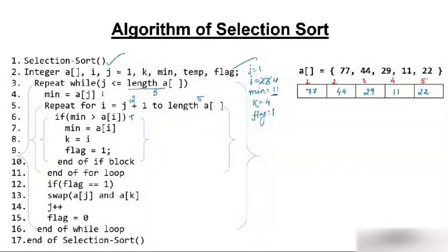i cannot be incremented further. We come out of the for loop. Flag is 1 — so we swap a[j] and a[k], that is a[2] and a[5]. 22 comes to position 2 and 44 goes to position 5. Now the second element is also sorted. We have 11 and 22 sorted.